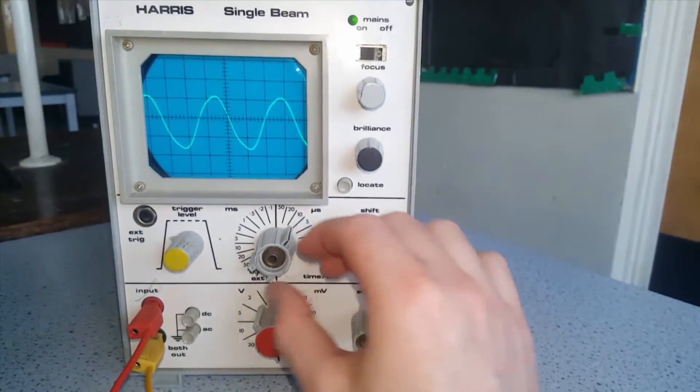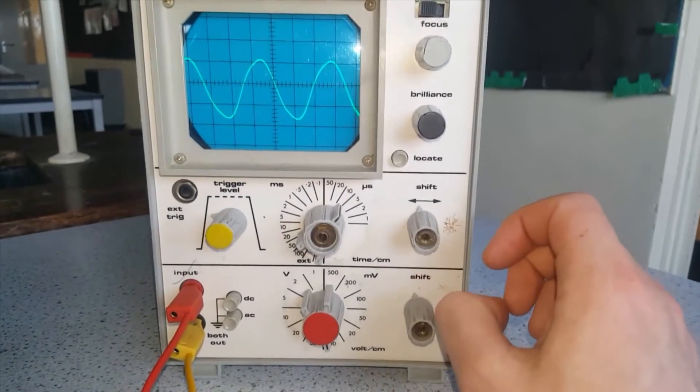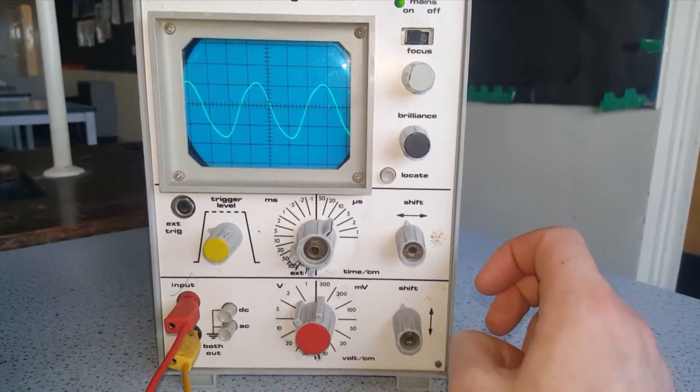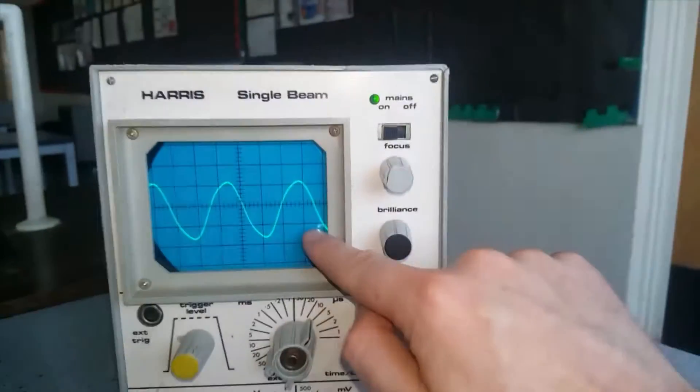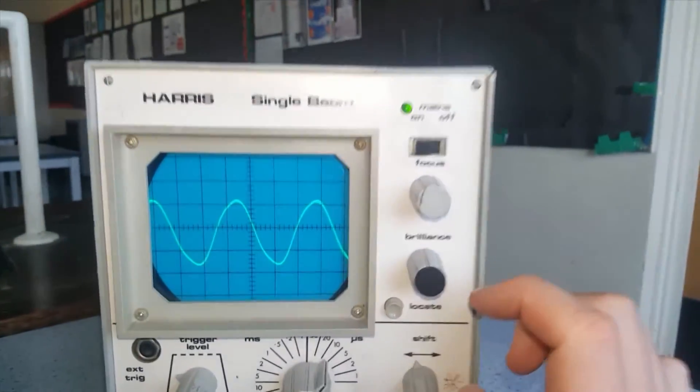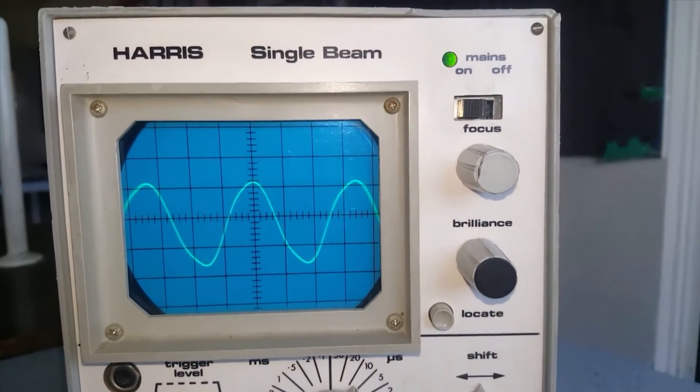So we can use this information to determine some of the properties of the wave. To start with, let's work out the amplitude of the wave. We know that vertically each centimetre represents 10 millivolts, so if we can shift our wave around here to allow us to more easily measure that.